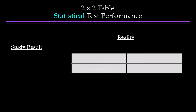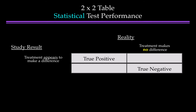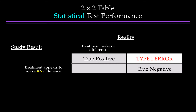Let's move to the 2x2 table for statistical test performance. Now the columns are about reality, and the rows are about the study result. If the reality is that treatment makes a difference and our study result finds that treatment appears to make a difference, that's a true positive. If the reality is that treatment makes no difference but our study result suggests that treatment appears to make a difference, that would be a false positive. And conversely, if the reality is that treatment makes a difference and the study result is that treatment appears to make no difference — but that's not right, here we call that a type 2 error.